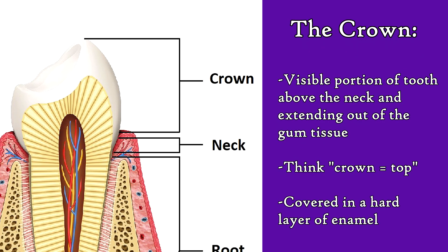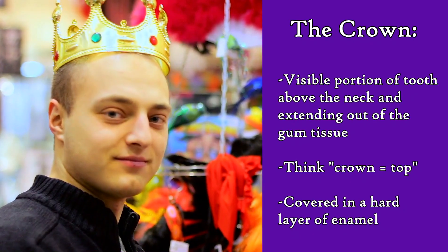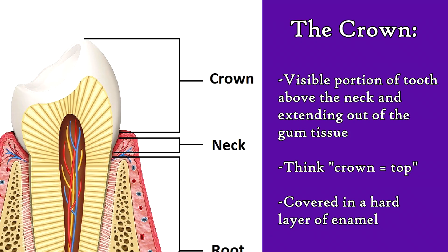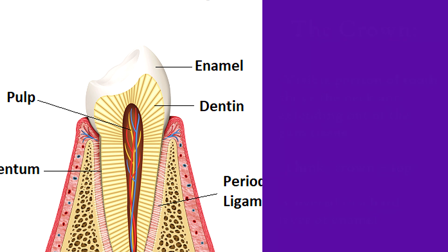The crown is the visible portion of the tooth above the neck and extending out of the gums. Just as you have a crown on your head, you can think of the tooth's crown as the head or top of the tooth. It is covered in a hard protective layer called enamel, which covers the dentin and underlying pulp chamber and pulp.